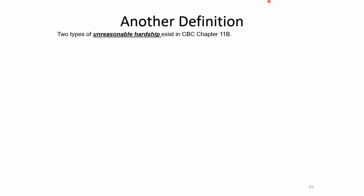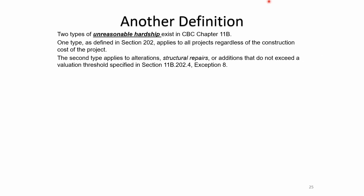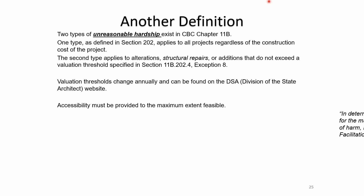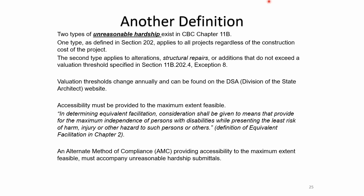There are two types of unreasonable hardship in CBC Chapter 11B. One type, defined in Section 202, applies to all projects regardless of construction cost. The second type applies to alterations, structural repairs, or additions that do not exceed the valuation threshold from 11B202.4. The valuation threshold changes each year — the Division of State Architect is in charge of that. Accessibility must be provided to the maximum extent feasible. In determining equivalent facilitation, consideration shall be given to means that provide for maximum independence of persons with disabilities while presenting the least risk of harm, injury, or other hazard.